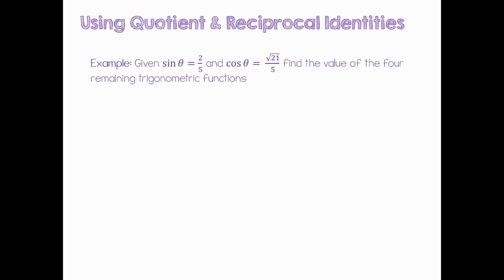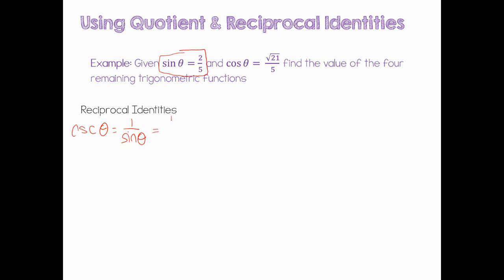Given that sine of theta is 2/5 and cosine of theta is √21/5, we are going to find the value of the four remaining trig functions. Let's first look at the reciprocal identity. We know the cosecant of theta is equal to 1 over sine of theta. Because we know sine of theta, we substitute: 1 over (2/5), which is the reciprocal, equal to 5/2. So cosecant of theta is equal to 5/2.